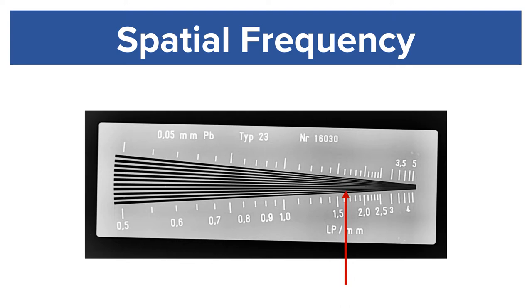Where on this phantom do the lines begin to blur together? At that point, you would say the spatial resolution has gotten so low that you can't differentiate the two objects.